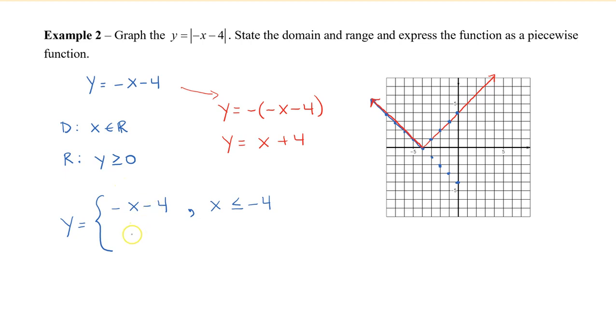So my second piece will be x plus 4, and that occurs when x is greater than negative 4. Not equal, because I've already chosen the first part to equal, so we don't write that again. So then we say that x is greater than negative 4, and that's it.